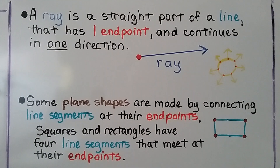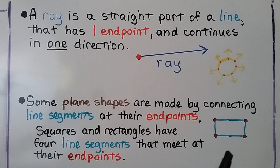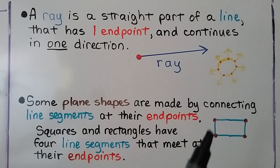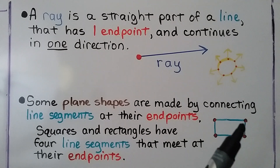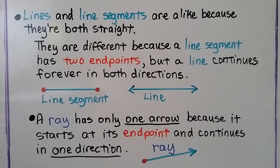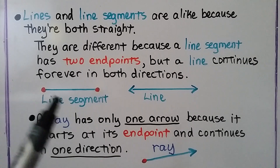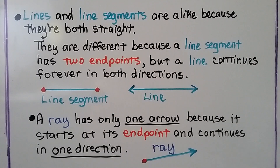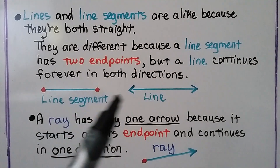Some plane shapes are made by connecting line segments at their endpoints. Squares and rectangles have four line segments that meet at their endpoints. Here's a line segment with an endpoint here and an endpoint here — that's one, two, three, four line segments for that rectangle. Do you notice that each line segment starts and stops at a corner? Lines and line segments are alike because they're both straight, but a line segment has two endpoints while a line continues forever in both directions. A line segment is just a little piece of that line.